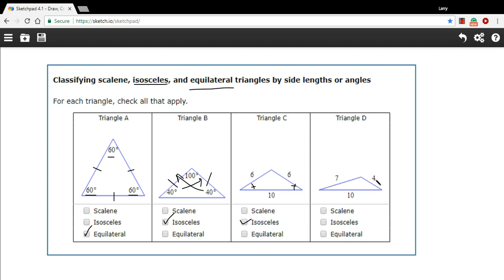And this last one here, we have side lengths of 4, 7, and 10. When they're all three different side lengths, that is a scalene triangle.